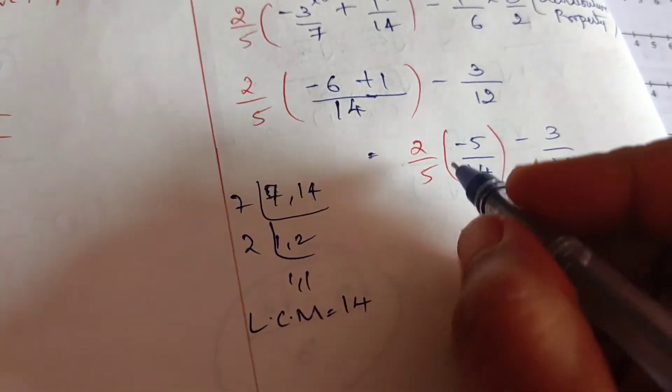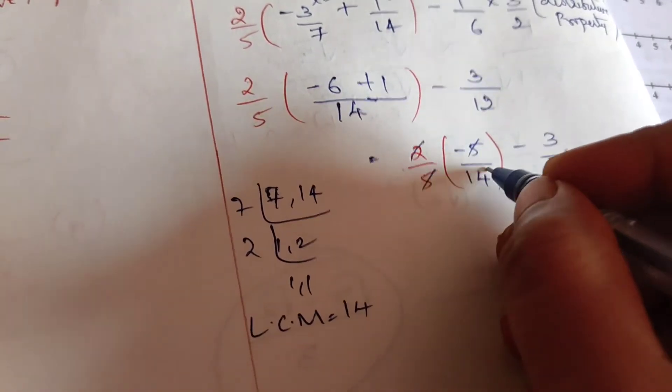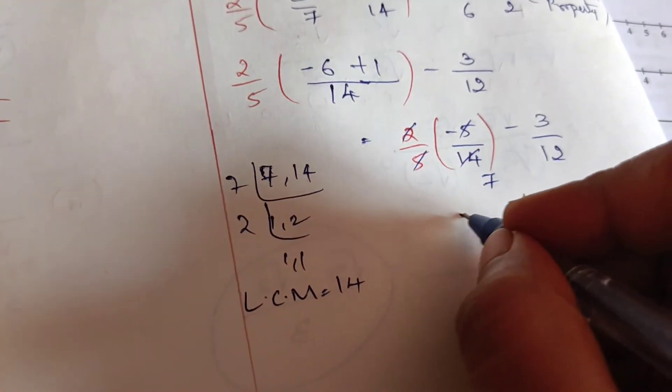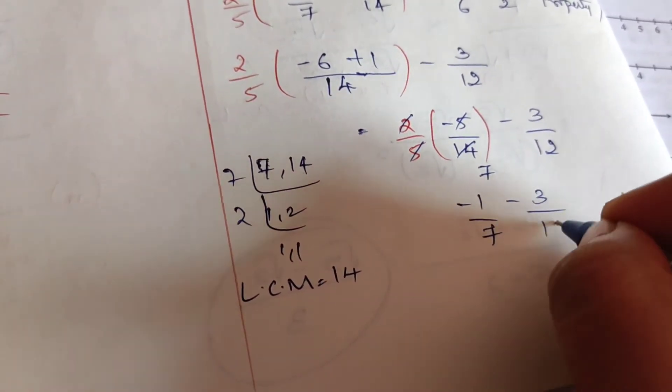What do we get? -6 + 1 = -5, bigger number sign, by 14 - 3/12. Here since it is multiplication we can cancel: 5 and 5 cancel, 2 × 1 = 2, 7 × 2 = 14. So we get -1/7 - 3/12.